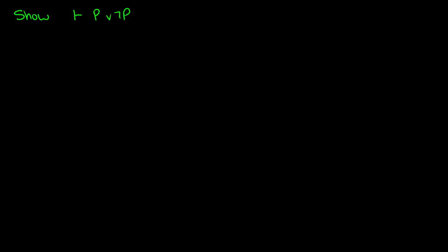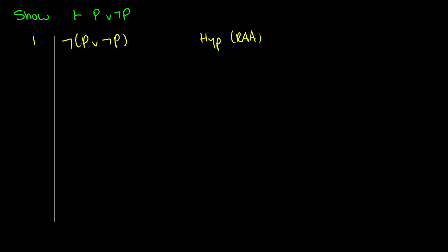Now let's show that P∨¬P is a theorem. To do this, I'm going to assume the negation for contradiction — I'll assume ¬(P∨¬P) is true as a hypothesis for RAA. That'll be line 1, with our sub-proof line introduced here. My goal is to get P∨¬P and ¬(P∨¬P) together to derive a contradiction so I can negate things.